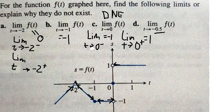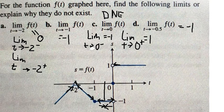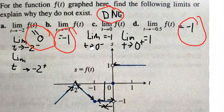Similarly for negative 0.5 — that is this location here. As we go closer and closer to negative one-half, the limit is negative one. That is the answer for the question. Thank you for watching.